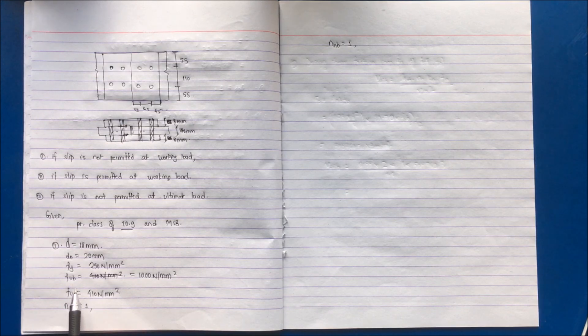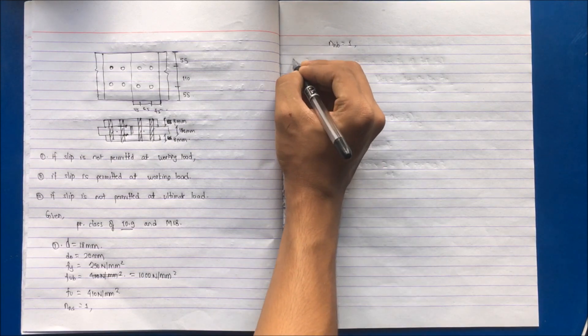This is another type of question related to the friction bolt. You are provided with property class 10.9, which means the ultimate tensile stress of the bolt will be 1000 N/mm². For a 4.6 bolt it would be 410 N/mm² for the plate, FY will be 250 N/mm², and NNB will be 1 for the double butt joint.